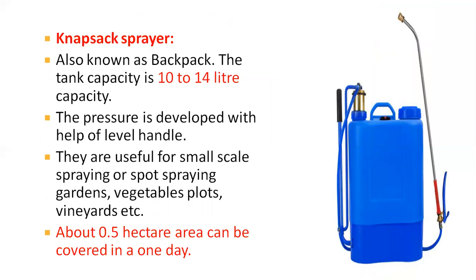The knapsack sprayer is also generally used in crops to control various weeds, insect pests, and diseases. It is also called the backpack sprayer because the tank capacity is 10 to 14 liters and the sprayer is carried on the back of the operator. It is commonly manually operated with a hydraulic pump inside, and pressure is developed with the help of a hand lever. It is useful for small-scale spraying in gardens, vegetable plots, and vineyards. About 0.5 hectares can be covered in one day, requiring only one person.